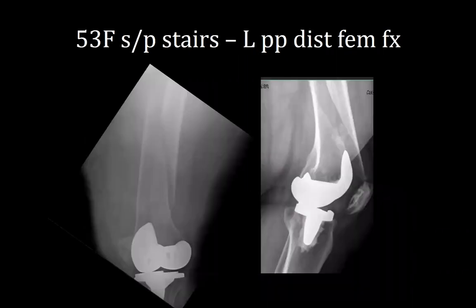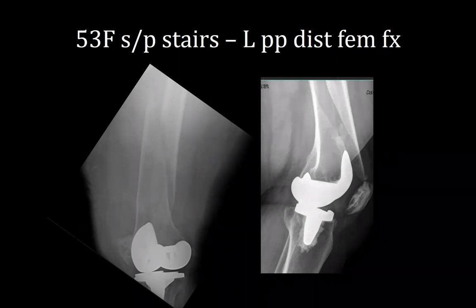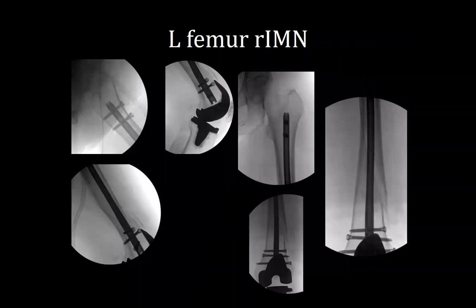The next patient is a 53-year-old female who fell down a few stairs at home and sustained a left pseudoperiprosthetic distal femur fracture. She was neurovascularly intact and was taken for a left femur retrograde intramedullary nailing. She had a total knee done four years ago.